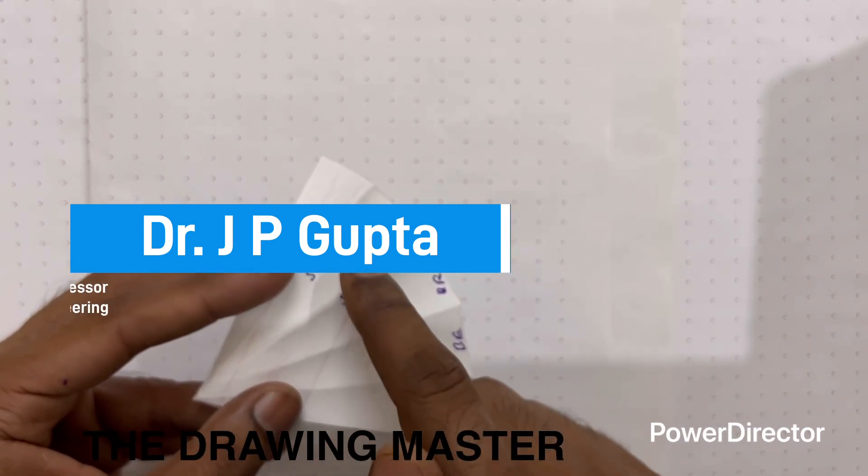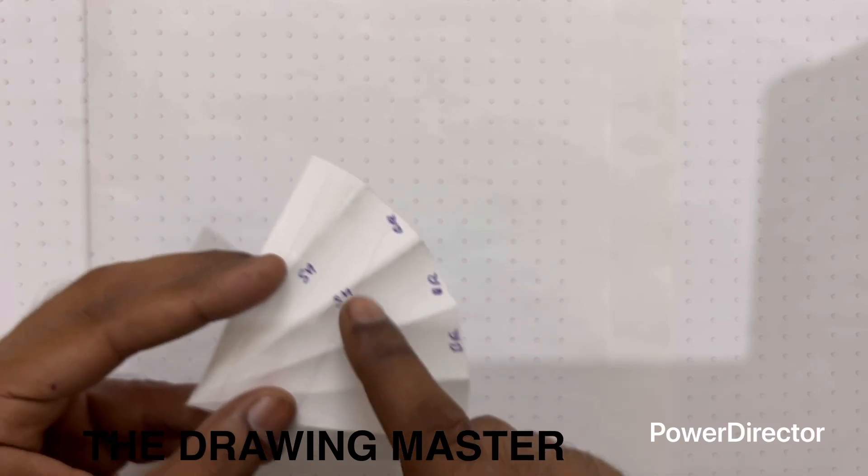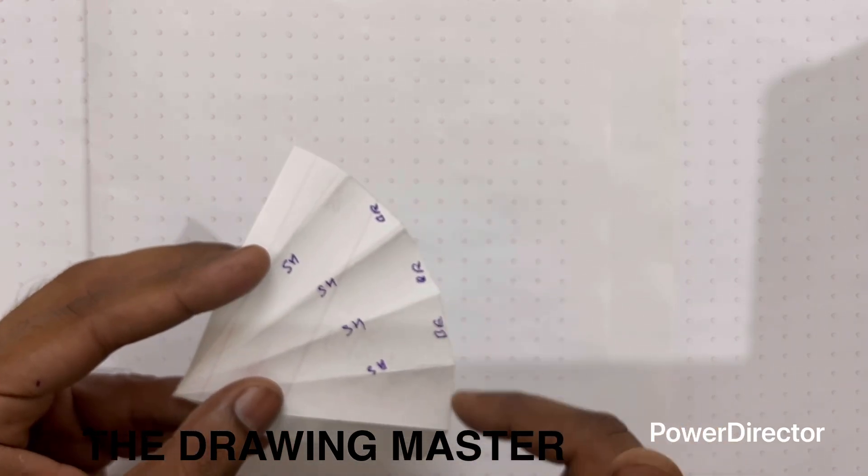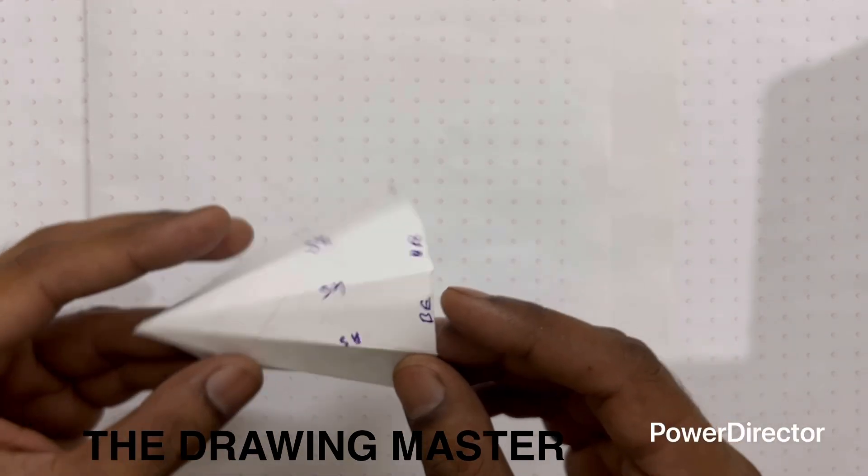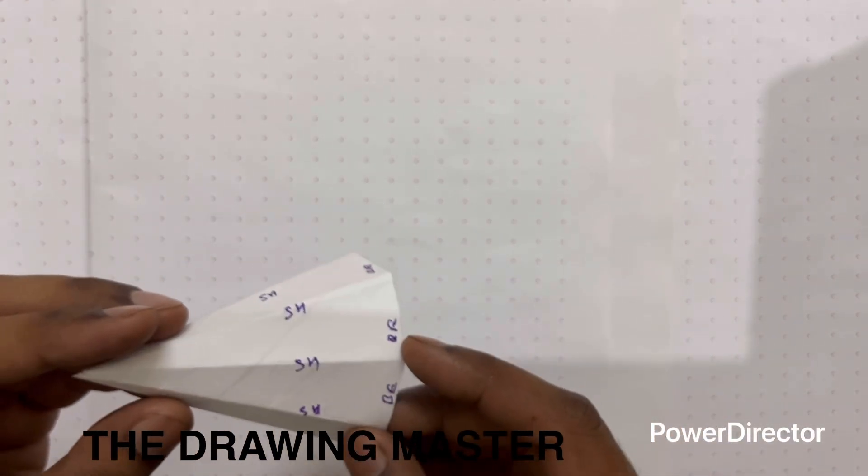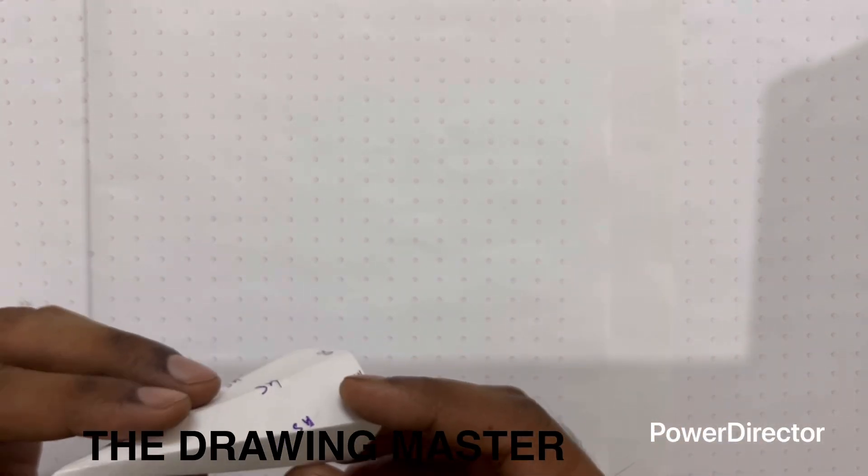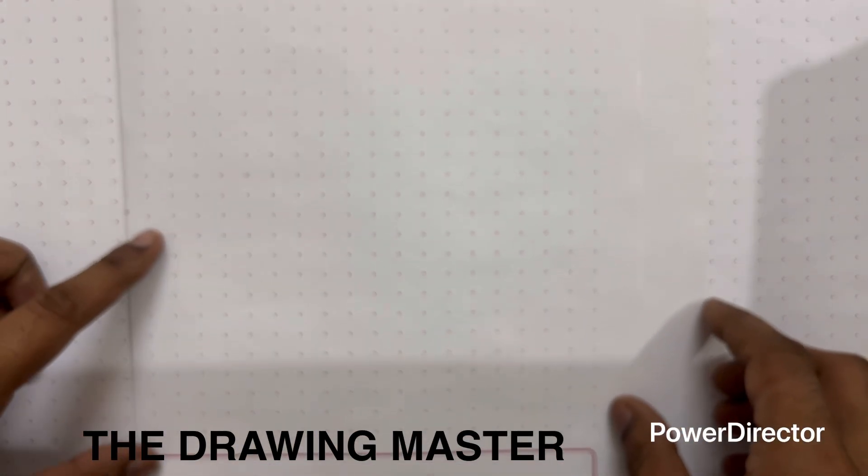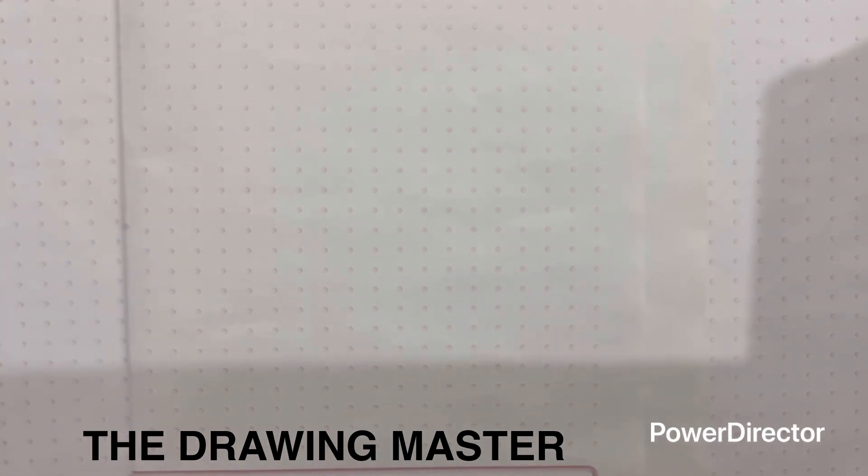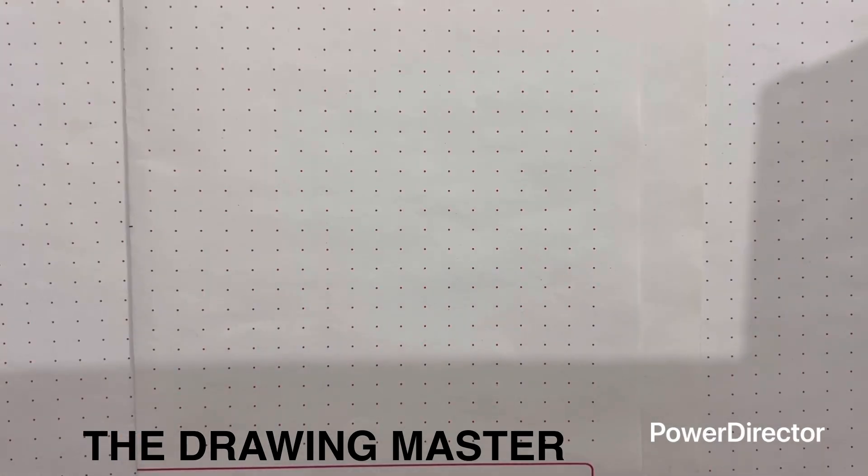All the lines are slant heights and these are all base edges. I have already uploaded three videos - triangle base, square base, and pentagonal base pyramid. Almost the procedure is the same, about 90% of the procedure is the same. First we have to draw the top view of the pyramid, then front view, and then we'll develop the surface.